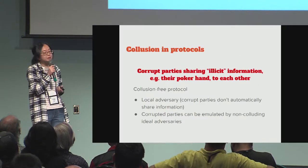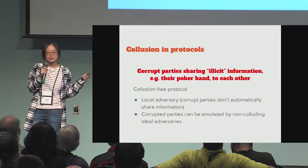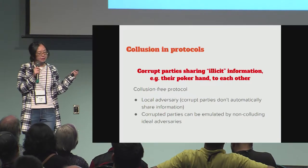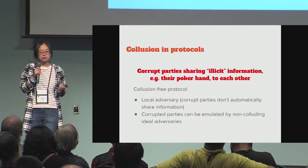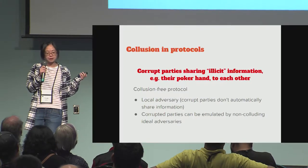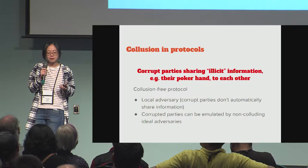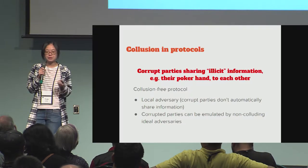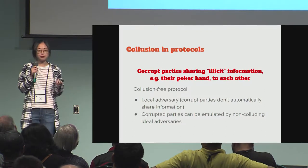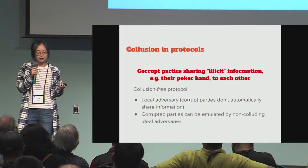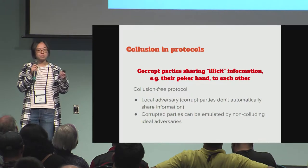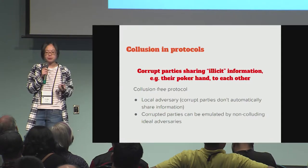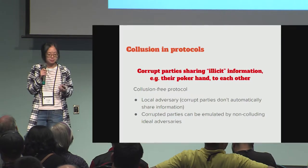Collusion in protocols is pretty much the same thing. Collusion happens when corrupt parties send some kind of disallowed information through subliminal messages — for example, their poker hand.